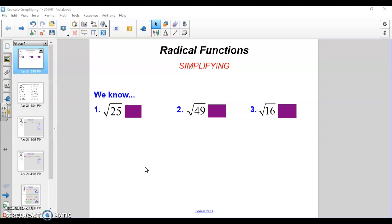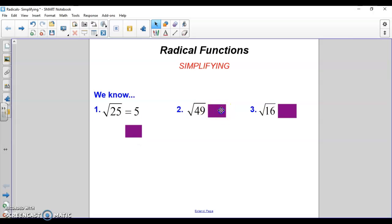This week we're starting radicals. We've done a bit before, so it shouldn't be too bad. All we're doing is simplifying radicals. We know certain ones like square root of 25 is 5, square root of 49 is 7, square root of 16 is 4 - these are things we should already know.